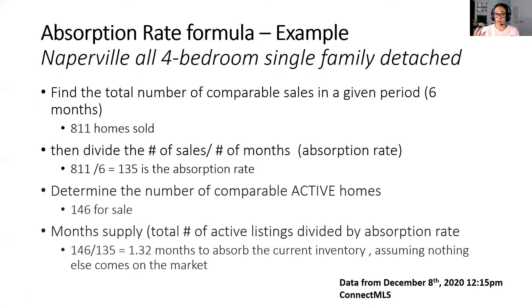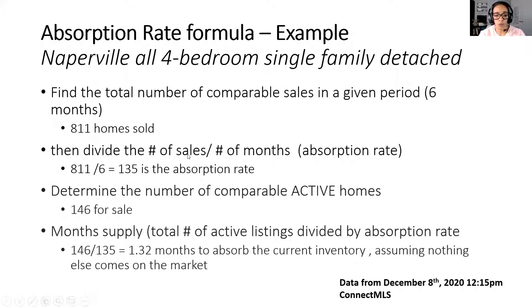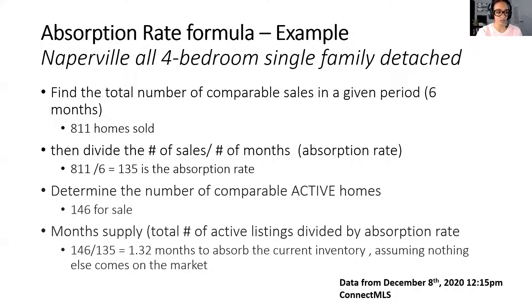Let's look at a different city. I chose Naperville, four-bedroom single-family detached as of December 8th at noon. You find the total number of comparable sales — 811 four-bedroom homes sold in six months. Naperville is bigger than Oak Park; I think it's the largest city in Illinois outside of Chicago. Aurora and Naperville go back and forth. You divide 811 by six, which gives you 135. Then determine the number of comparable active homes: 146 divided by 135 gives you the months to absorb the inventory. Inventory is extremely low in a lot of our communities.